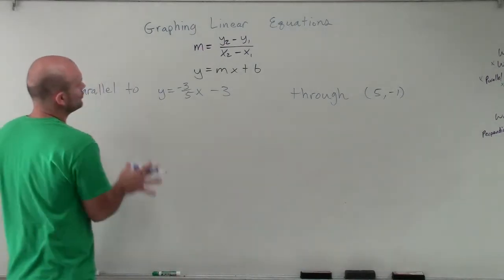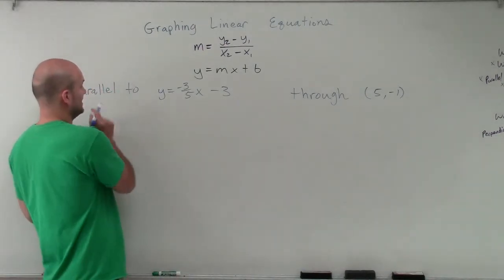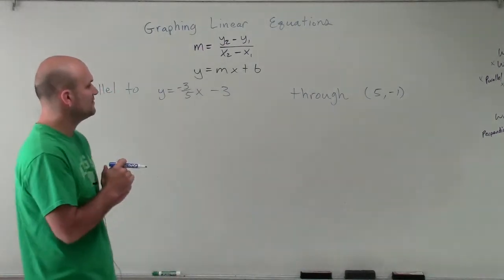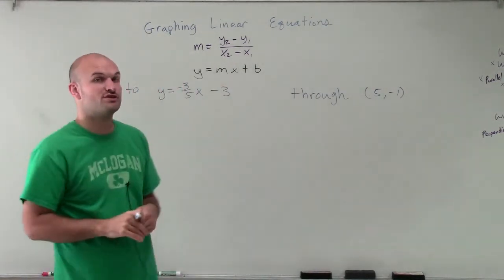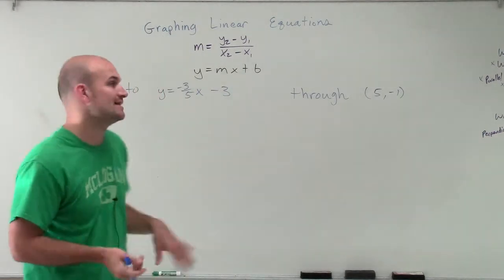Welcome. So what I want to do is show you how to graph a new line that's going to be parallel to y equals negative 3 fifths x minus 3, that's going to go through the point (5, -1). And we're going to use our equation y equals mx plus b to find this new equation.